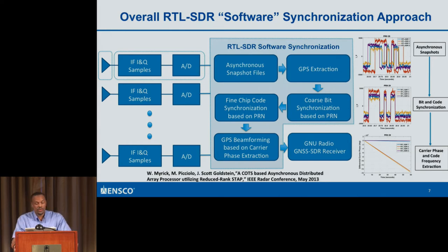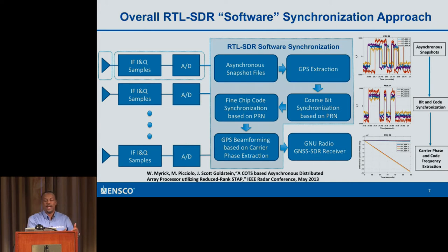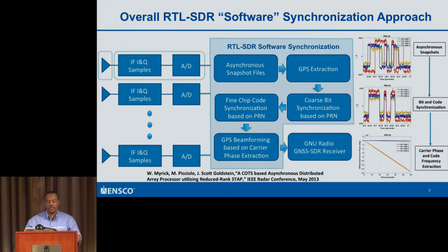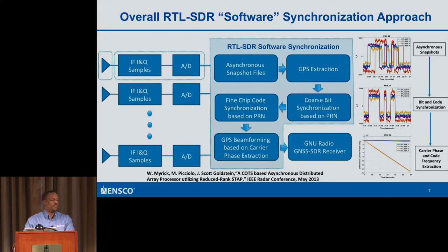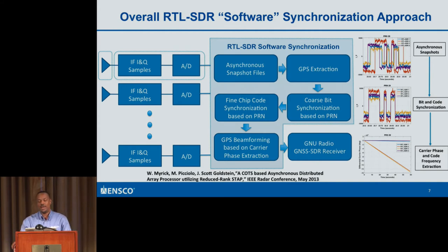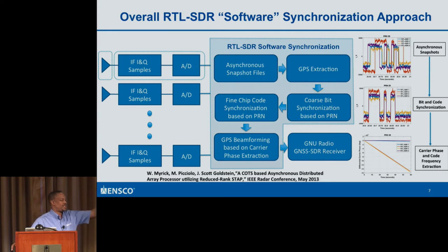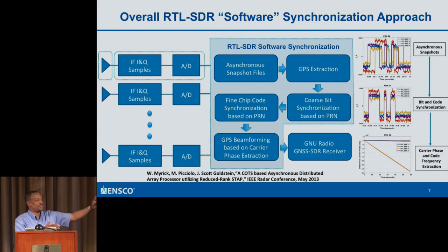What I came up with is a software synchronization approach: give me a stream of data samples or snapshots, and I will figure out how to make those snapshots appear as if they were taken by a single receiver with a common clock and common phase reference. The idea is that asynchronous snapshots can always be made synchronous to something else. I may have four asynchronous snapshots, pick one SDR as my reference, match all other SDRs to it, and now those SDRs become synchronous relative to that reference.